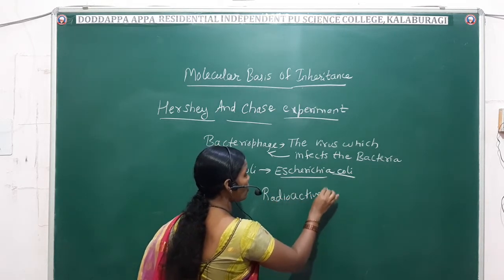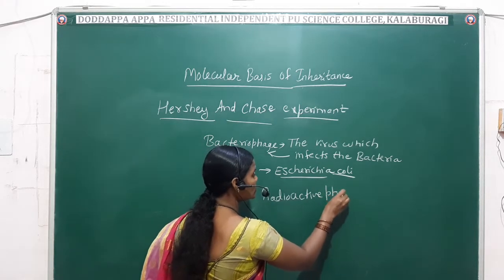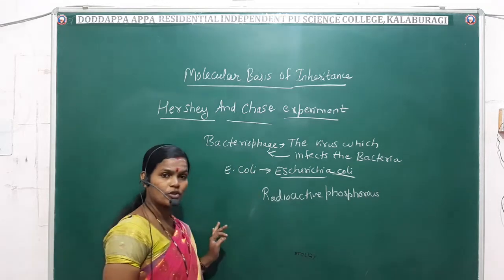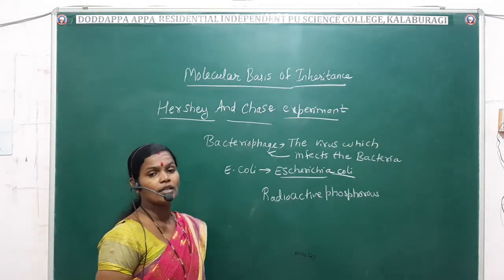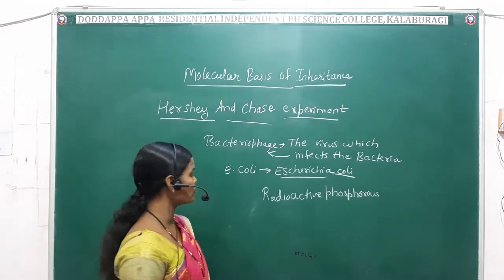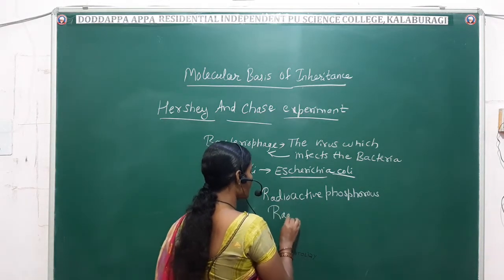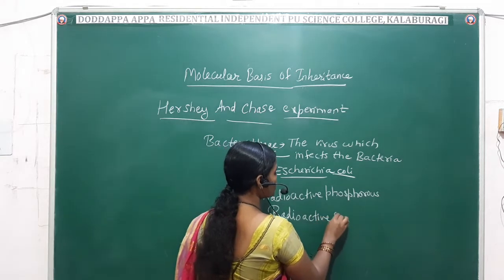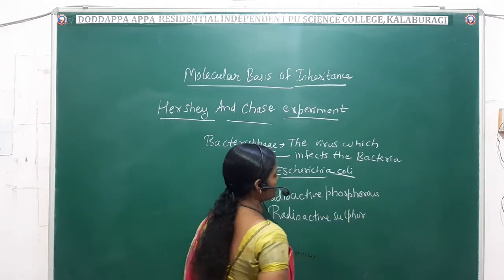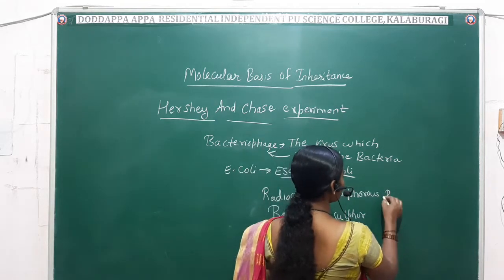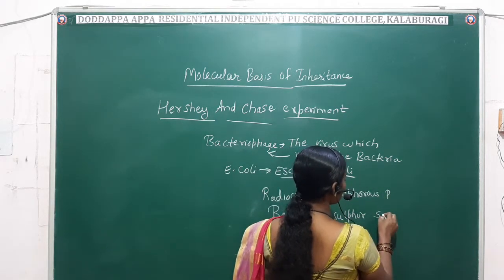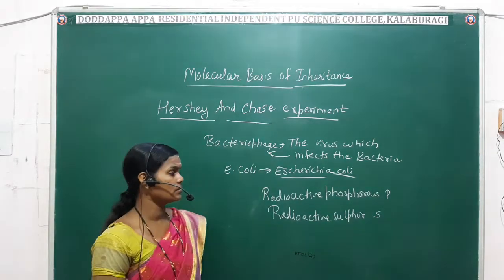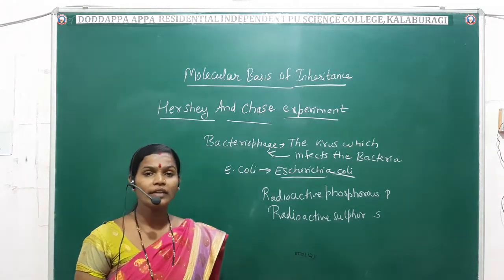They have taken radioactive phosphorus and also radioactive sulfur for the experiment. So radioactive phosphorus and radioactive sulfur — these are the key elements they used.